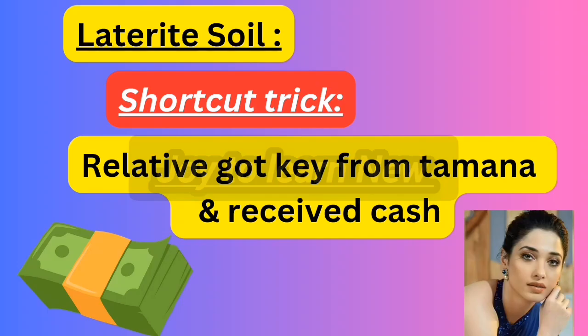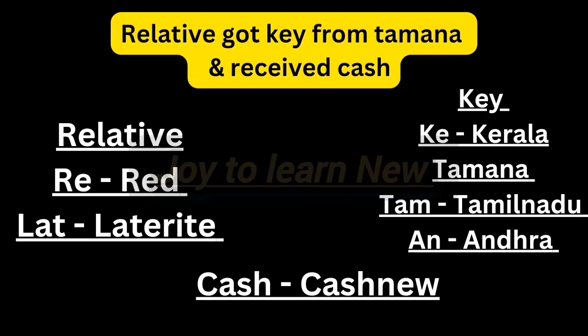The last shortcut is: 'Relative got key from Tamanna and received cash.' From 'relative' — RE stands for red, LAT stands for laterite, giving red laterite soil. 'Key' — KE stands for Kerala. 'Tamanna' — TAM stands for Tamil Nadu, AN stands for Andhra. 'Cash' refers to cashew. Red laterite soil in Kerala, Tamil Nadu, and Andhra is suitable for crops like cashew.